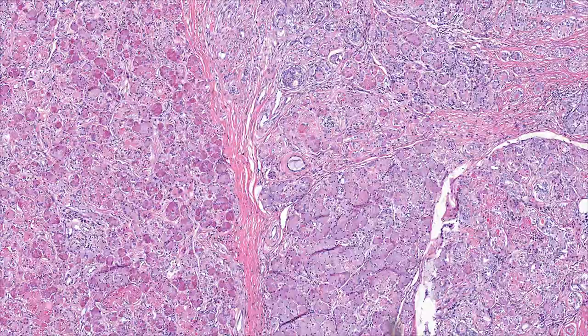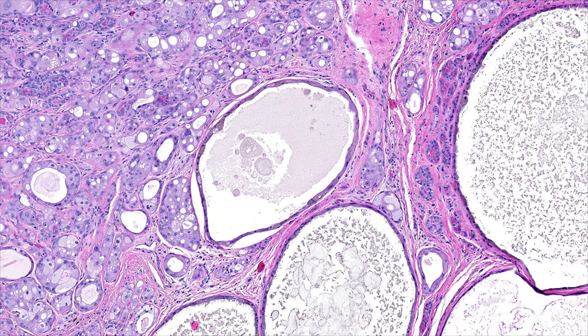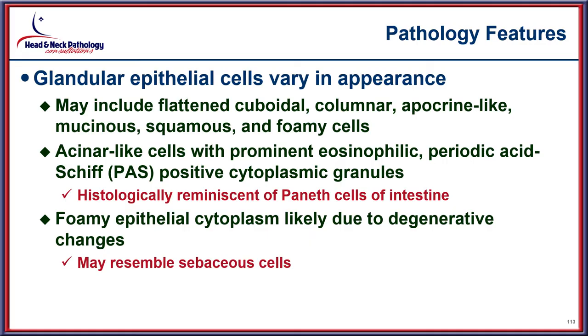Fibrous connective tissue separates the lesion into nodules or lobules. Multiple different-sized cysts are present — some remarkably large, filled with degenerated debris, with smaller cysts immediately adjacent, also containing histiocytes and degenerated epithelium in the luminal component. Adjacent to the cystically dilated areas, apocrine metaplasia is common and can be quite remarkable. Acinar differentiation is also seen in a haphazard distribution. The glandular epithelium has a remarkably variable appearance: flattened to cuboidal, columnar and apocrine-like, with mucinous, squamous, and foamy degeneration also possible.